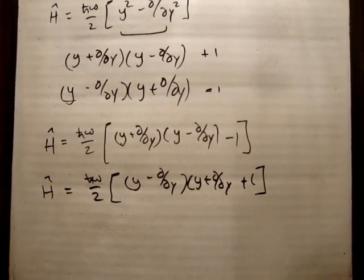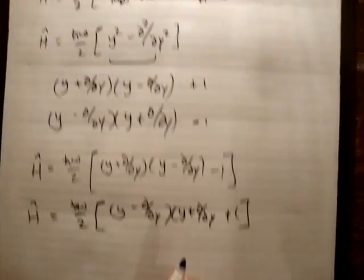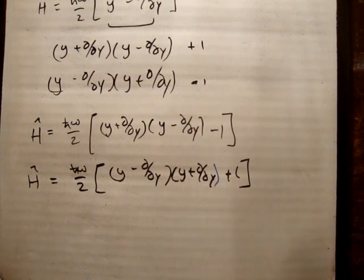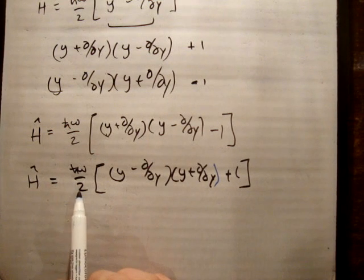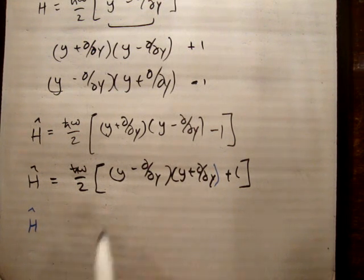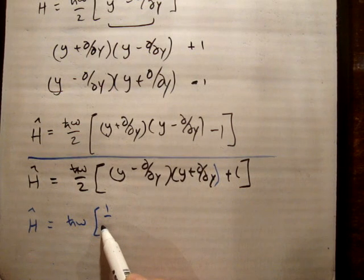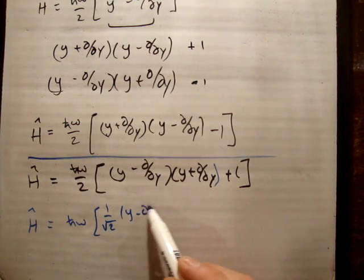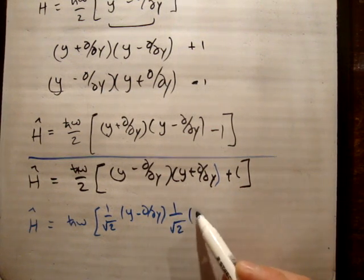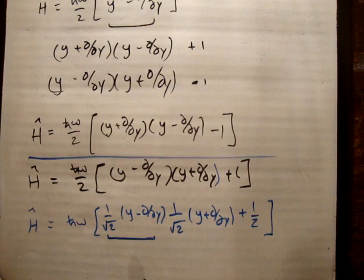Going back to our operators, we notice we have a factor of 1 over root 2 in front of each one, giving us A plus and A minus. So what I can do is bring this factor of a half in. The Hamiltonian becomes h-bar omega times (1/√2)(y - d/dy) times (1/√2)(y + d/dy) plus 1/2. This term here is our lowering operator A minus, and this term is our raising operator A plus.